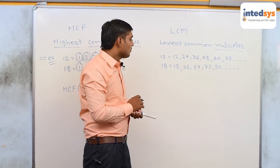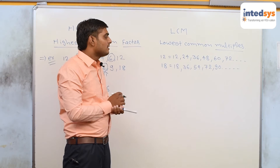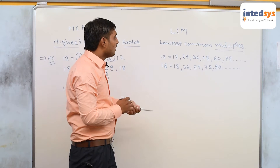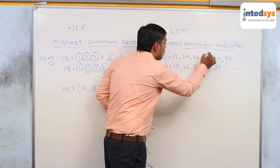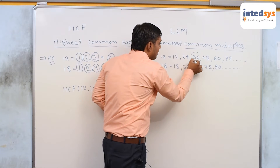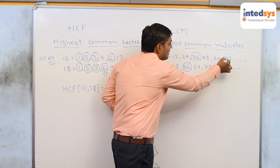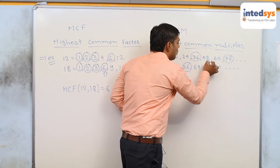Then, multiples of 18 are 18, 36, 54, 72 and 90. Then, common multiples are 36, 72 and so on.